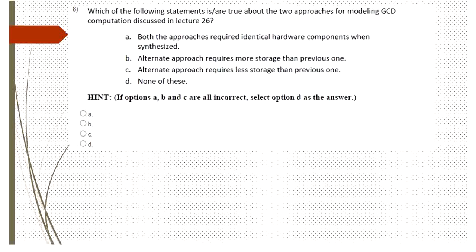The next question asks which statements are true about the two approaches for modeling GCD computation discussed in Lecture 26. The second approach stores both the present state and the next state, requiring one more storage element. That's why the second approach requires more storage than the first. So B can be the answer.